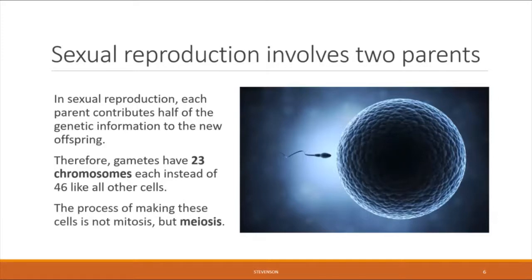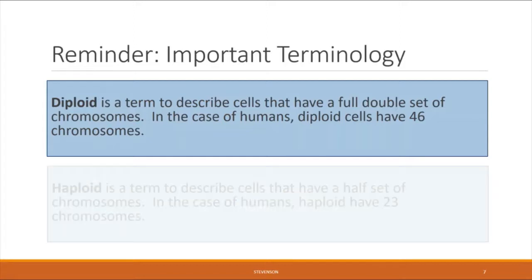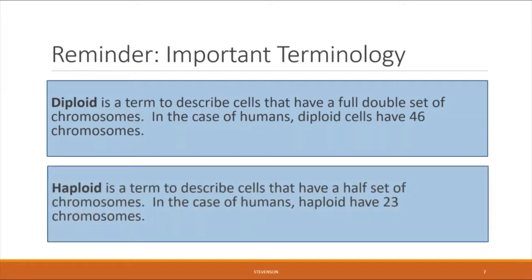It's worthwhile reviewing a few terms introduced in the last chapter. The term diploid describes cells that have a full double set of chromosomes — in humans, that means 46 chromosomes. Haploid cells, which we introduced last chapter but didn't discuss in detail, describes cells that have only a half set of chromosomes. In the case of humans, the haploid gametes have 23 chromosomes.